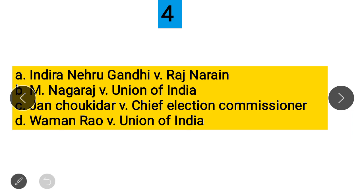Question 4: Which case is known as the election case? Option A: Indira Gandhi vs. Raj Narayan, Option B: M. Nagaraj vs. Union of India, Option C: Jain Chokidar vs. Chief Election Commissioner, Option D: Waman Rao vs. Union of India. The correct answer is Indira Nehru Gandhi vs. Raj Narayan, in which Indira Gandhi's election was declared unconstitutional. We discussed this in the cases.